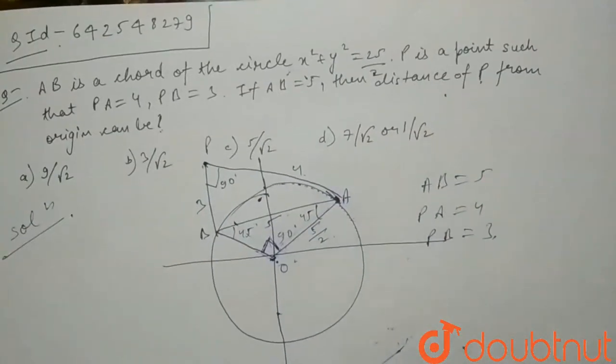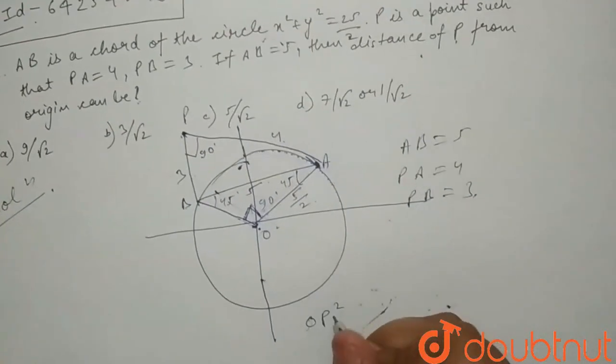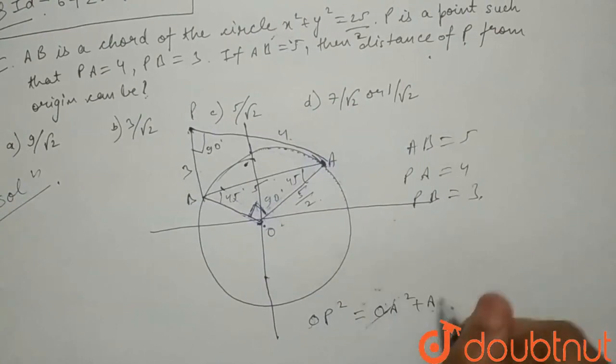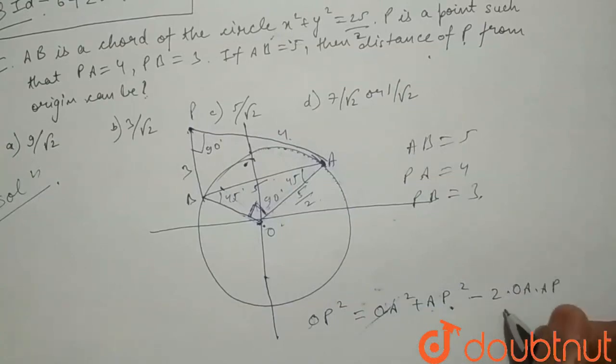So now we are using the formula: OP squared equals OA squared plus AP squared minus 2 times OA times AP and the cosine of the angle between these two.